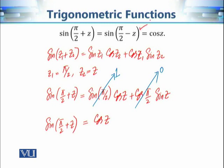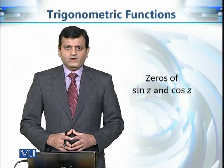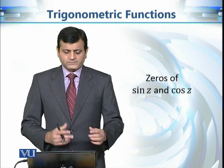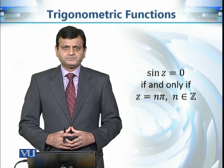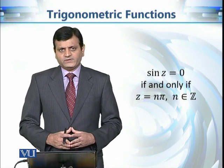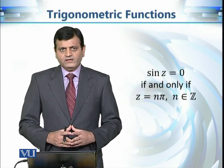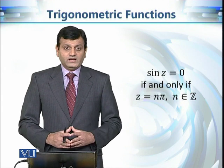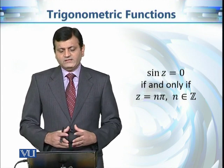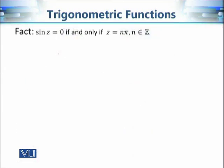Similarly, sin(π/2 − z) = cos(z), using cos(π/2) = 0. The next natural question is: what are the zeros of the complex sine and cosine functions? This will be our next task — discussing the zeros of sine and cosine in the complex case.